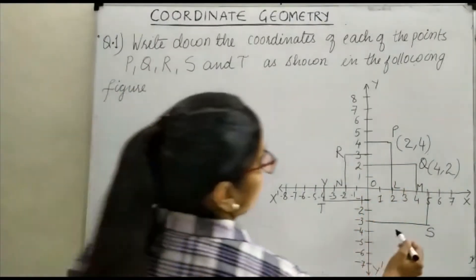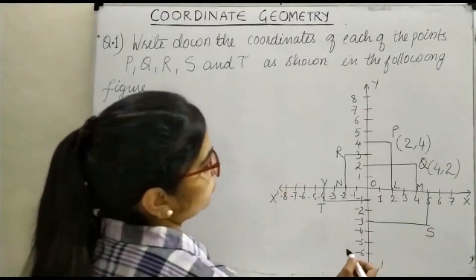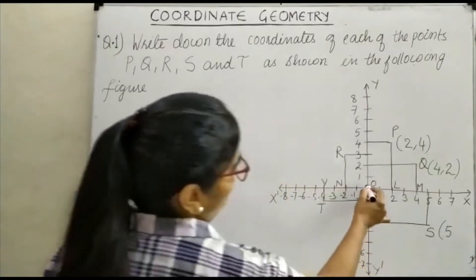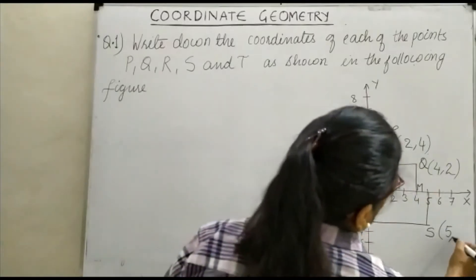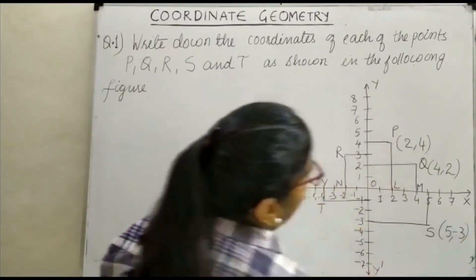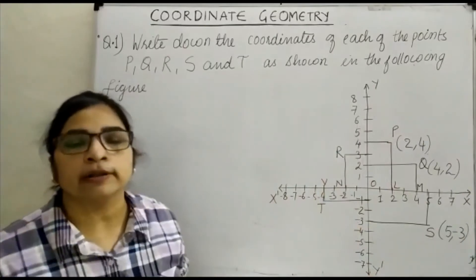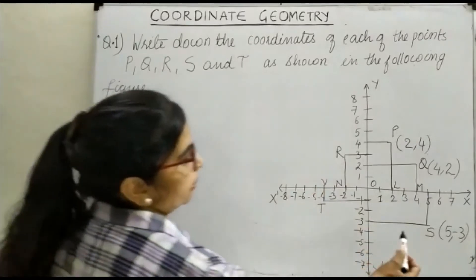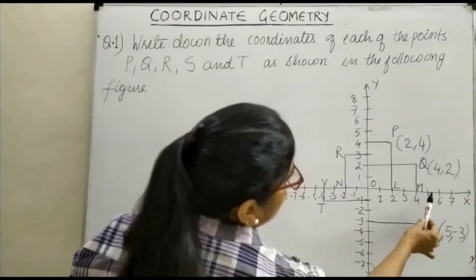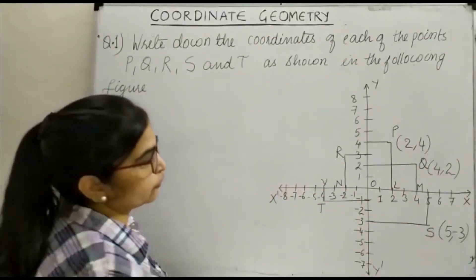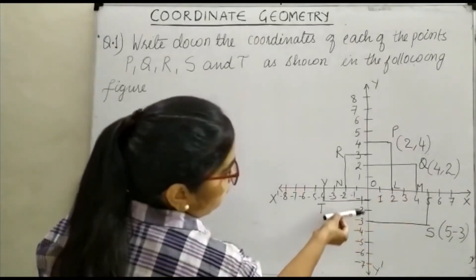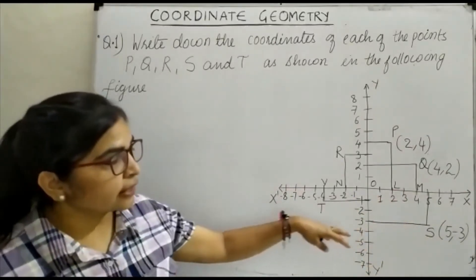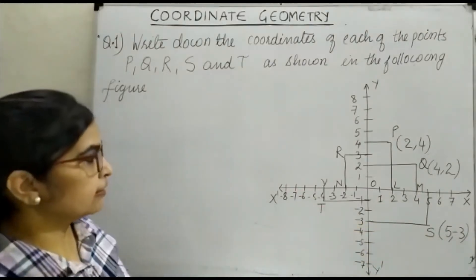When you come to point S, the x-coordinate is 5 and the y-coordinate is minus 3. Always remember you have to write the x-coordinate first and then the y-coordinate. Point S is 5 units from the y-axis and 3 units below the origin, and that is why the y-coordinate is minus 3.